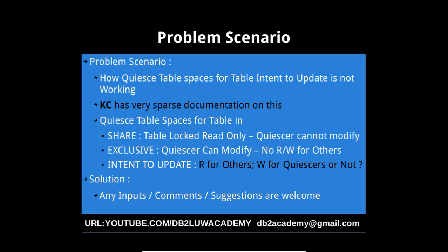Now, coming to intent to update — my understanding is the quiescer should be able to write or update the table, whereas others will be able to get a read-only copy based upon their isolation level, or not. I don't know, because it's not working that way. If you logically extend how quiesce behaves in share mode and exclusive mode, we can conclude this is how intent to update should behave, but there's no difference between share mode and intent to update mode — in share mode nobody can update, even the quiescer, and the same thing is happening in intent to update. So something is amiss here.